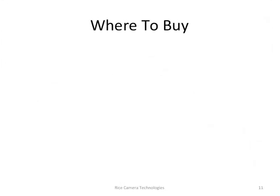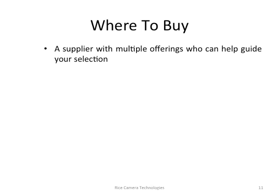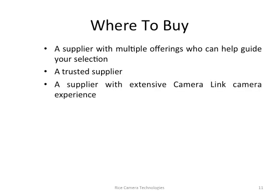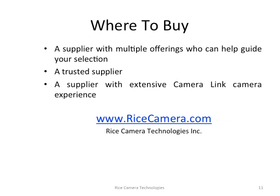Where to buy: if you're looking for good quality products, it's better to work with a company that has multiple offerings to help guide your selection. Go with a trusted supplier where high-profile programs have chosen them. Rice Camera Technologies is our company, and our website is www.ricecamera.com. There you can find our extensive selection of CameraLink products for military, scientific, and machine vision applications.